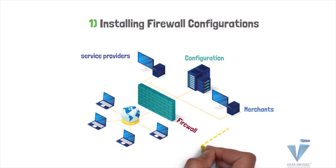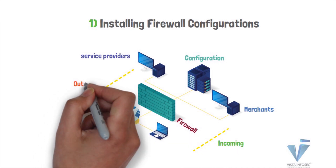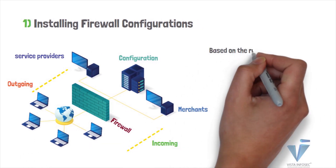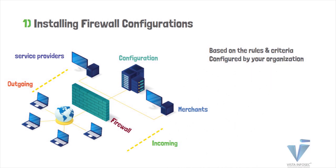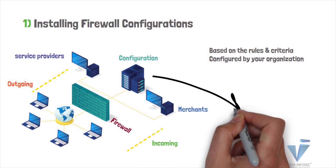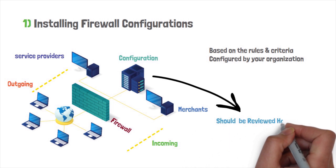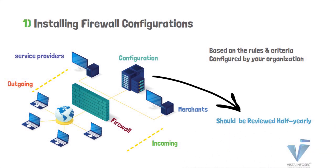These firewalls filter the incoming and outgoing network traffic based on the rules and criteria configured by your organization. Organizations should establish a firewall and router standard that facilitates a standardized process for allowing or denying access rules to the network. Configuration of these firewalls and router rules should be reviewed every six months to ensure that there are no insecure access rules that may allow access to the sensitive cardholder data environment.